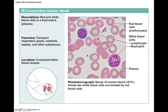When blood clots, the protein fibers within plasma stick together and form a mesh, allowing blood to become more solid rather than liquid. In terms of its location, blood should only be found within blood vessels. If blood is found elsewhere, the blood vessels have ruptured, resulting in a hematoma — essentially a leakage of blood within a tissue.